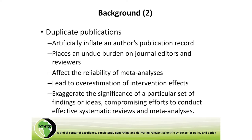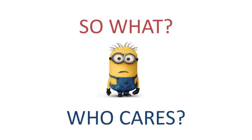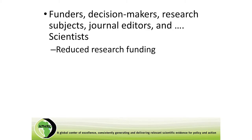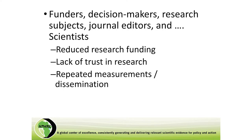Duplicate publication affects the reliability of metadata and meta-analyses, leads to overestimation of intervention effects, and exaggerates the significance of particular findings. Funders, decision makers, and research editors all care about this now. It has reduced research funding, because some funders have become doubtful about certain research publications. It also leads to lack of trust in research, repeated measurements for nothing, waste of resources, and sometimes unethical behavior — you can find papers online with DOIs that are simply duplications of work done elsewhere.